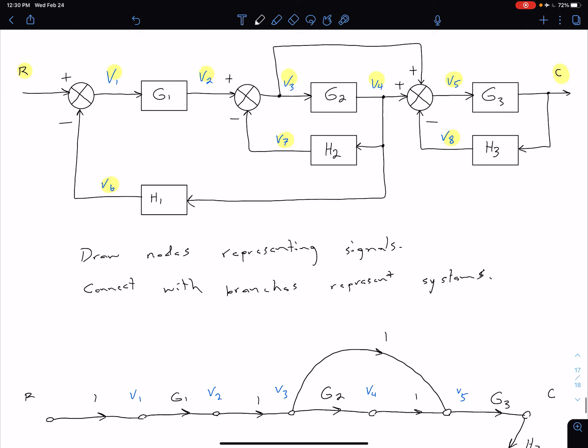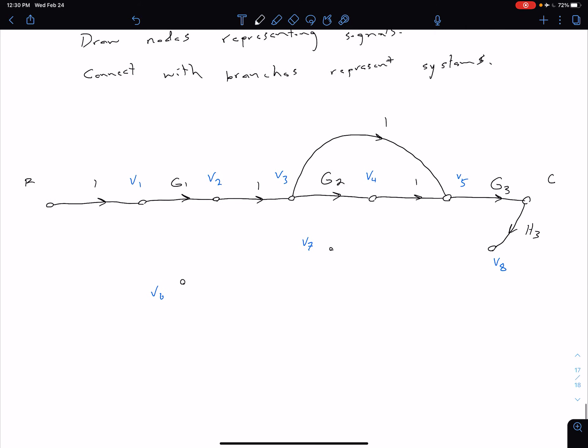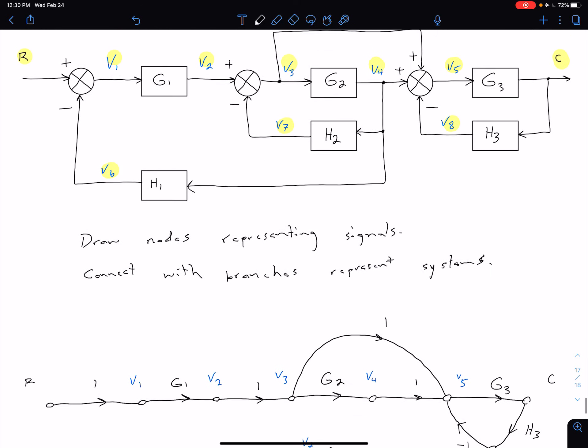And then we see that our V8 is going into signal V5, and it's being subtracted at this summing junction. So we want to have a gain or a multiplying factor of negative one. So V8 is being added to V5, and that is a negative one.